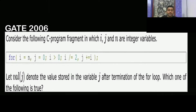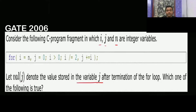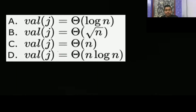In 2006 they asked this question. Consider the following C program segment in which i, j, and n are integer variables. For i equal to n, j equal to 0, i greater than 0, and i is i divided by 2 — j equal to j plus i. The value stored in variable j after termination of the for loop is denoted by val(j). Which of the following is true? You have to tell what is going to be the value of j.